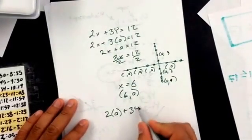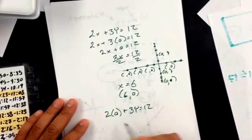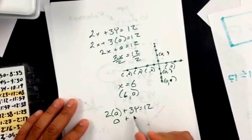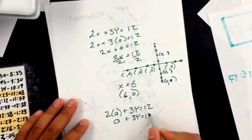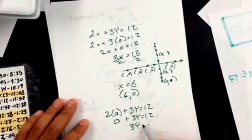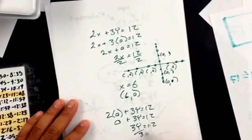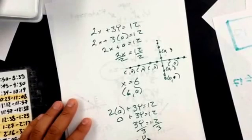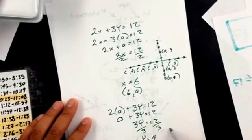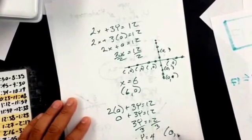2 times 0 plus 3y equals 12. 2 times 0 is 0. 0 plus 3y is just 3y. Divide by 3. Y equals 4. But this is also a point. It's 0 comma 4.